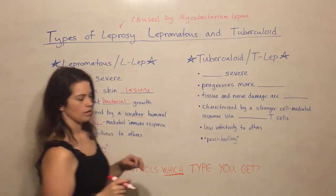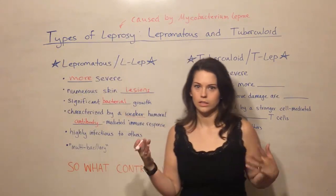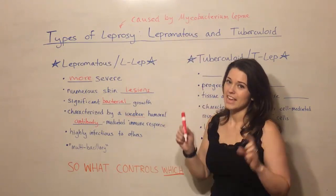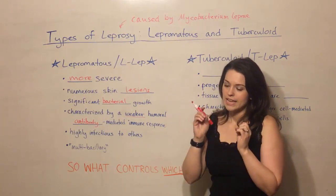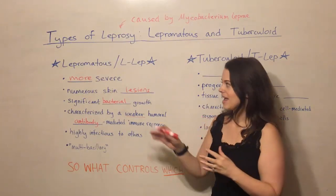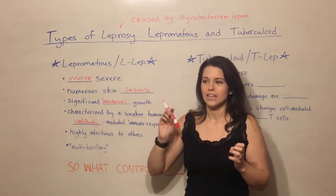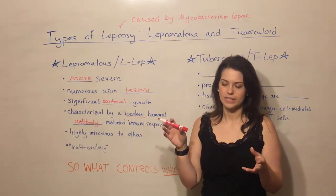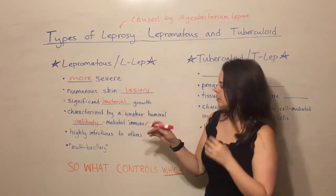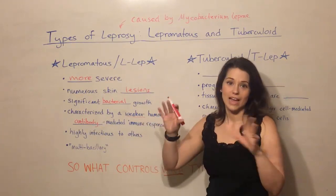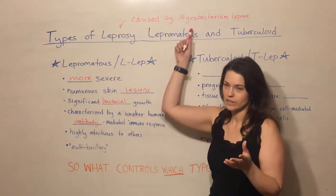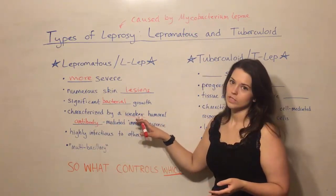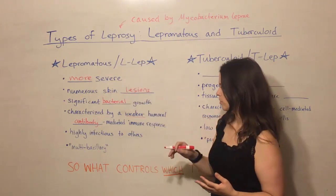So it's an antibody-mediated immune response. You might say, well, antibodies are good for us — they fight off lots of pathogens. Yes, that's true, but Mycobacterium leprae is an intracellular pathogen, so it actually gets inside cells and replicates there, and antibodies are all extracellular. Antibodies are secreted by plasma cells, which are a type of B cell, and they float around outside of cells. So all of the Mycobacterium leprae is inside cells, hiding from these antibodies, and that's why this is a weaker, less effective response — producing this more severe form of disease.